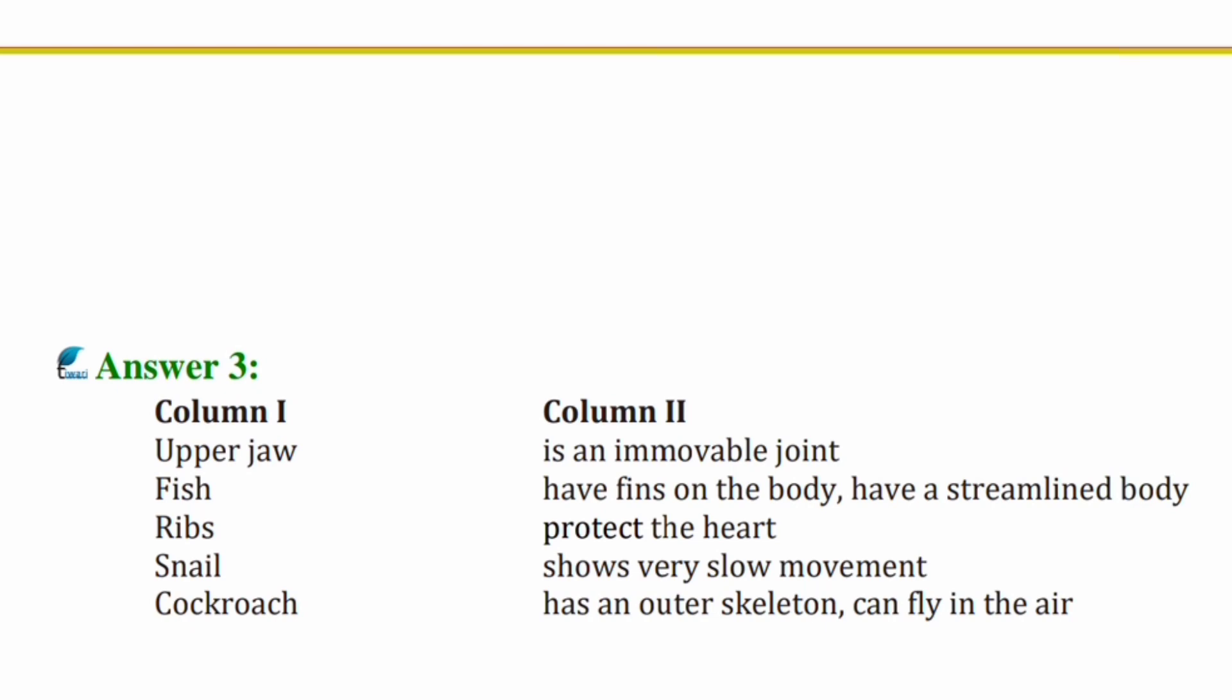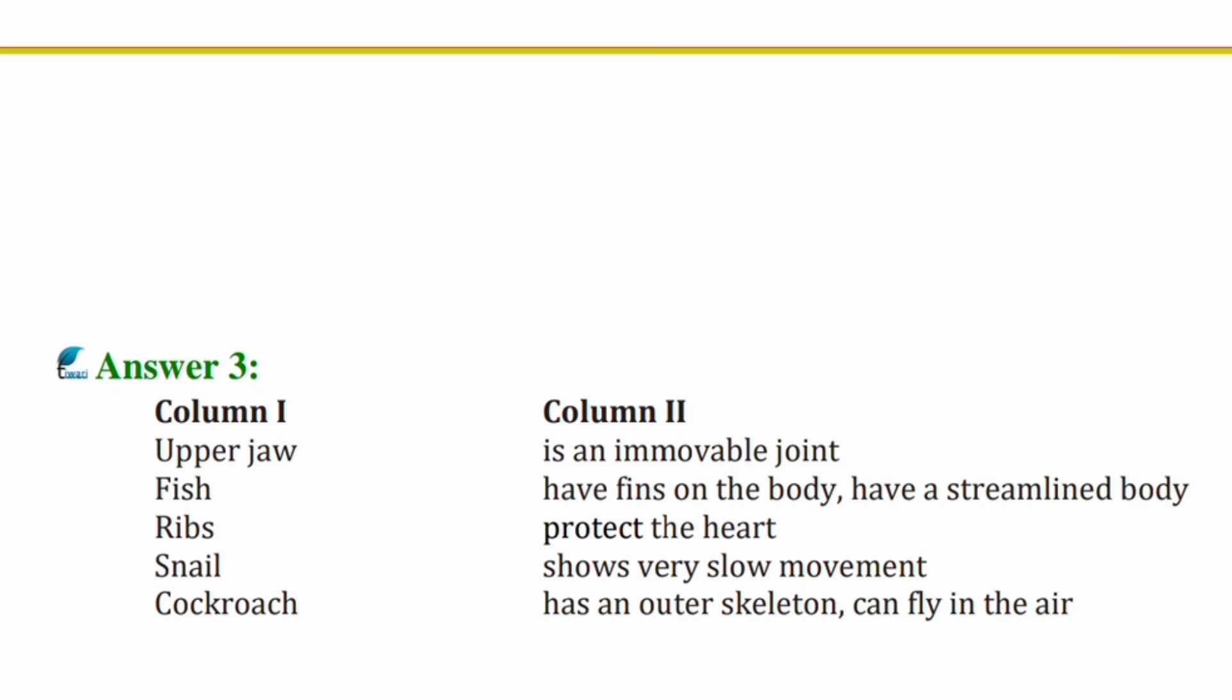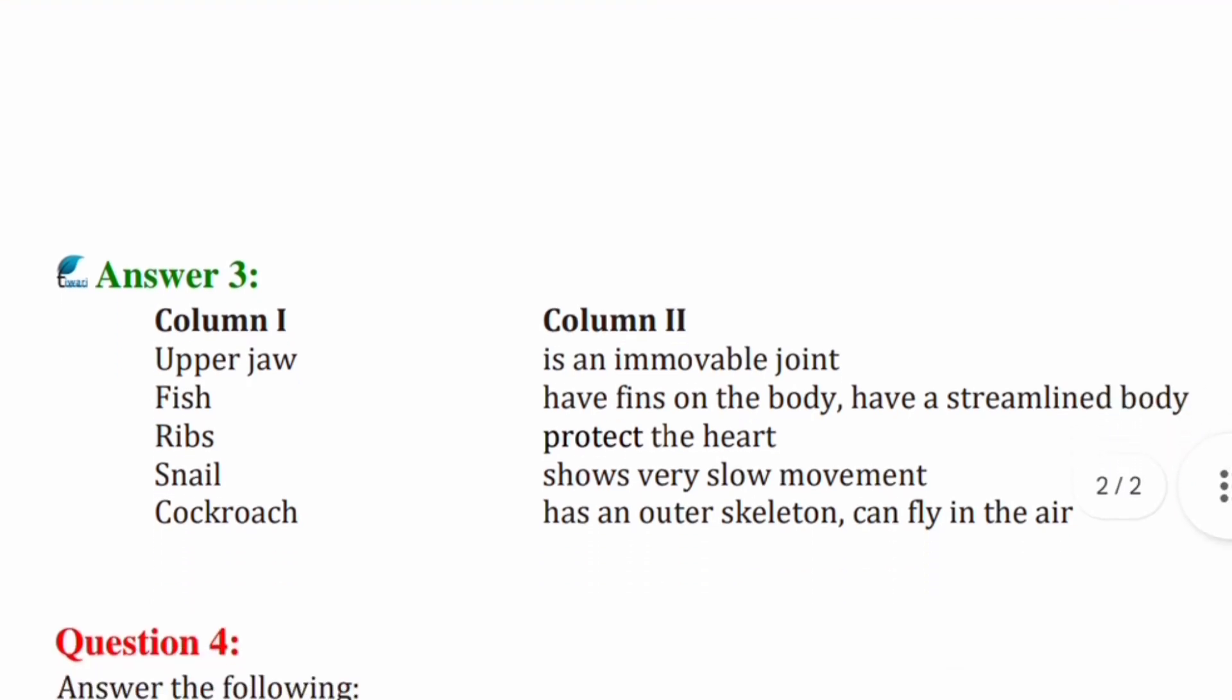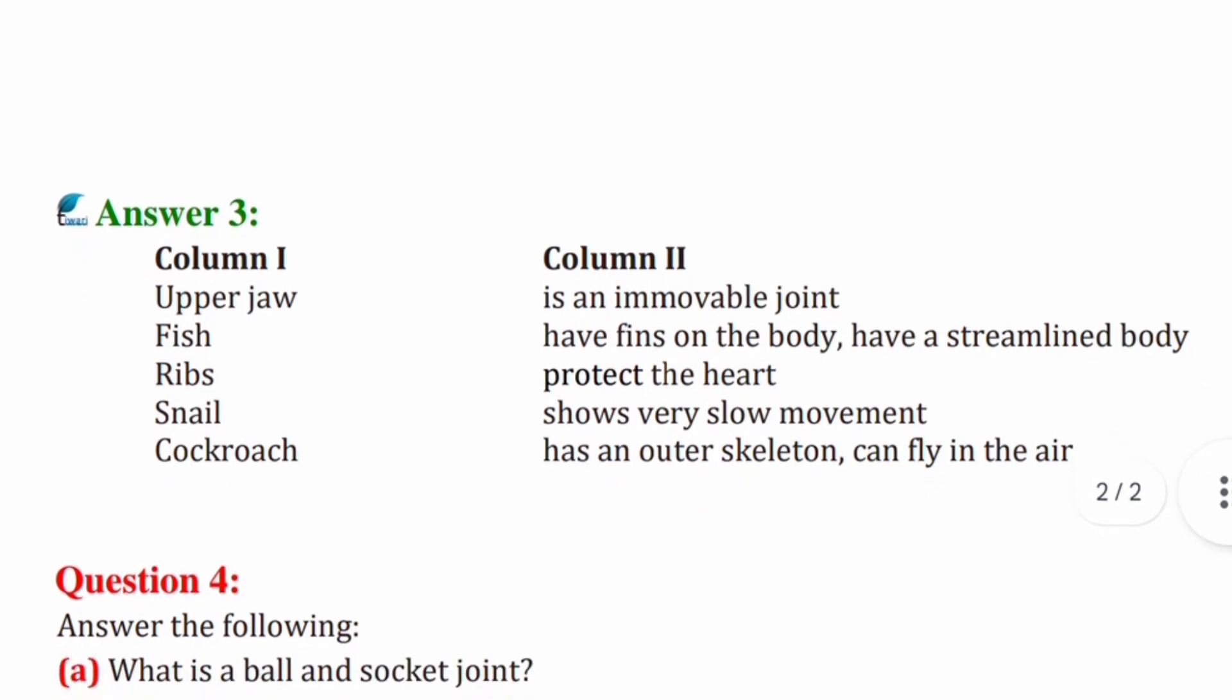Fish have fins on the body and have a streamlined body. Ribs protect the heart. Snail shows very slow movement. And cockroach has an outer skeleton and they can fly in the air.